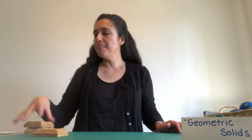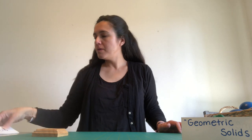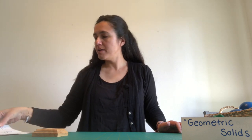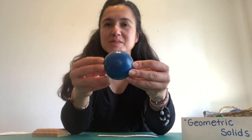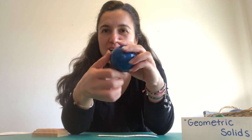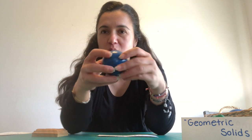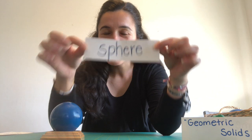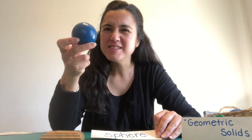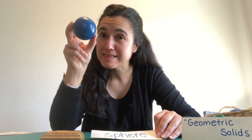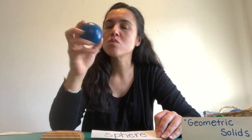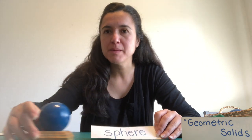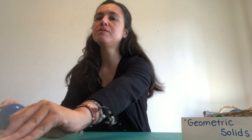The first shape I'm going to show you is this one. It's round and round and round and it's called sphere. That's a sphere. It looks like a planet. It looks like an apple. So that's a sphere.